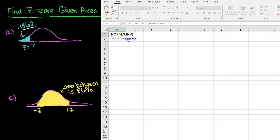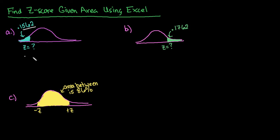And then it'll ask for the probability. The probability is the same thing as the area. So I would just put in the 0.1562 and hit enter. And that gives you your answer. So the z-score would be approximately negative 1.01.